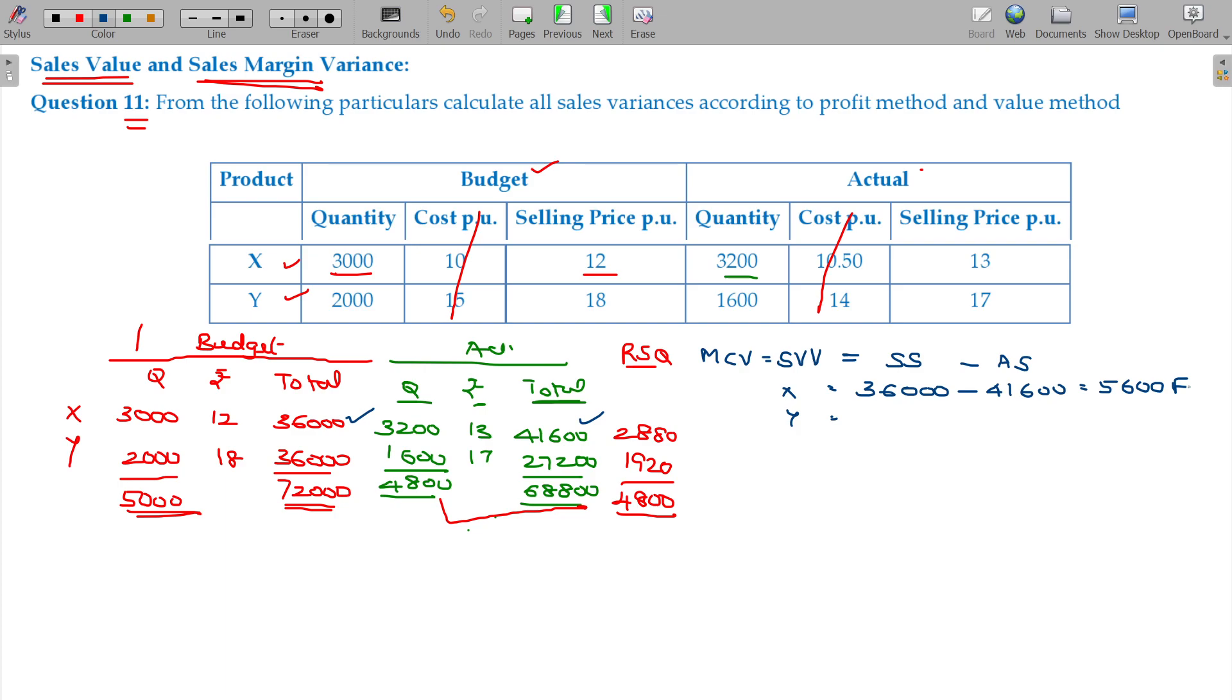We have two products X and Y. The standard sales of X being 36,000 and actual sales of X being 41,600. That gives us 5,600 favorable variance. Sales being favorable means we're happy. For Y it's 36,000 standard and actual is less at around 27,200, giving 8,800 adverse.